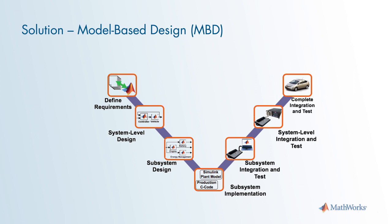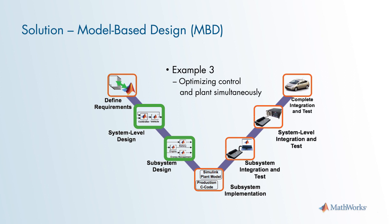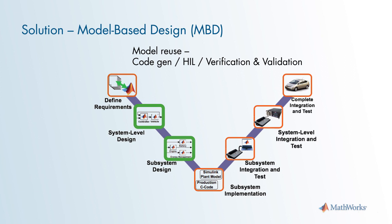The solution to these HEV design challenges is to utilize a model-based design process. In upcoming examples 1 and 2, I will show how to build plant models and develop control algorithms. You will then be able to evaluate different HEV architectures. You can use the system-level model to perform component sizing studies and assess the system performance. And most importantly, you will be able to do closed-loop control development early in the design process. In example 3, we will discuss optimizing the control and plant simultaneously. And it's not covered during these examples, but please note that the models you build now will be reused throughout the design process for tasks such as code generation, hardware-in-loop, and verification and validation. This model reuse is the basis of model-based design.